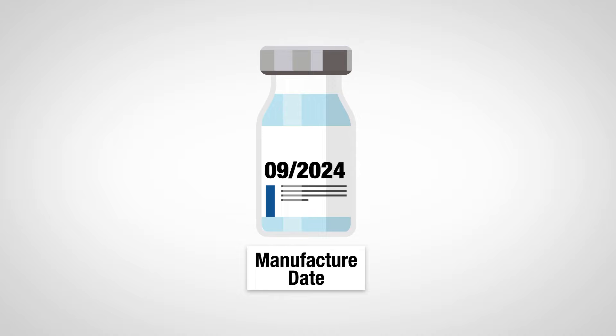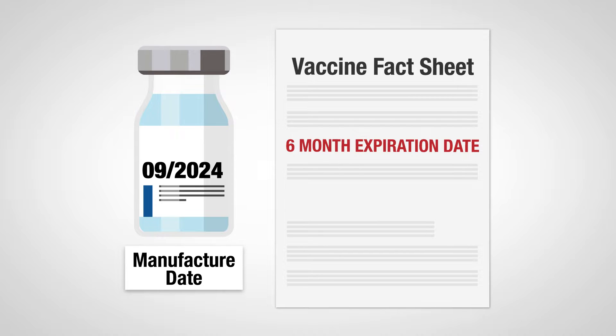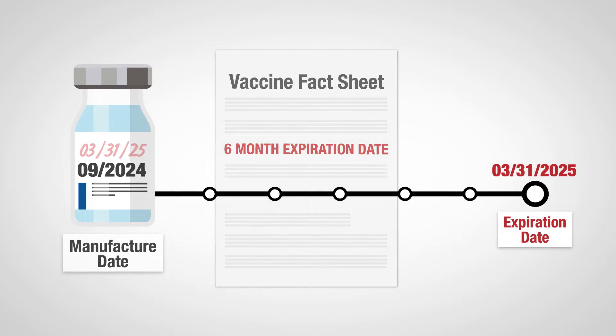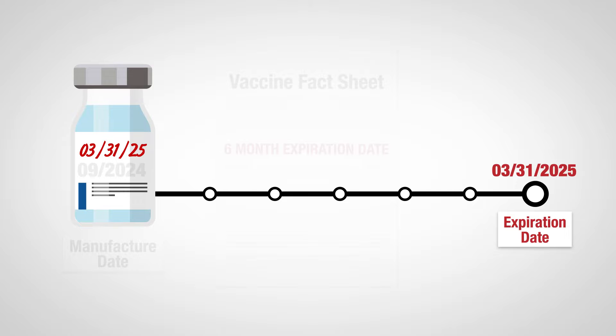Rather than a printed date, some vaccine manufacturers use a QR code, website, or phone number. Scan the code or navigate to the link or phone number provided to determine the expiration date. On rare occasions, the manufacture date may be printed instead of the expiration date. Check the vaccine package insert or fact sheet to calculate the expiration date based on the manufacture date. Once the date has been calculated, label the vial with the calculated date.